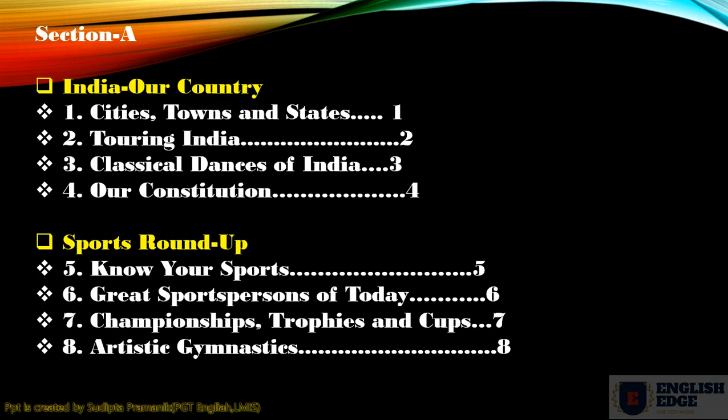It is Section A and there are two segments. First segment is India, Our Country, and second segment is Sports Roundup. Each segment contains four different chapters. So first segment, India, Our Country, contains: first chapter - Cities, Towns and States; second chapter - Tourism India; third chapter - Classical Dances of India; and fourth chapter - Our Constitution.